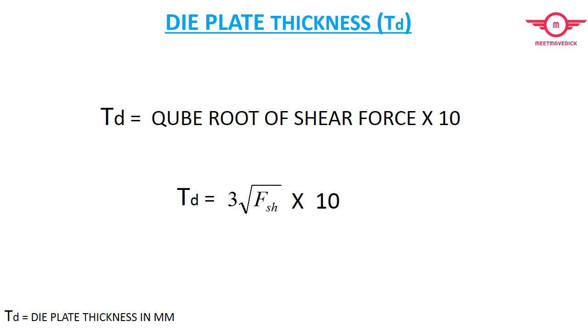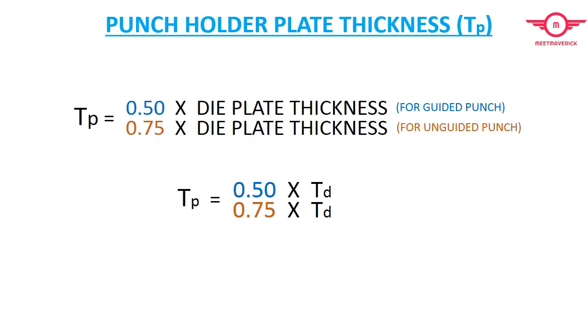Next we need to calculate the thickness of punch holder plate, which is denoted as Tp. For that we need Td, which is die plate thickness. Tp is equal to 0.5 times Td for guided punch, and Tp is equal to 0.75 times Td for unguided punch.